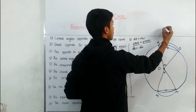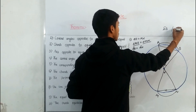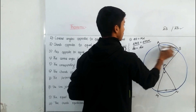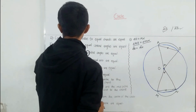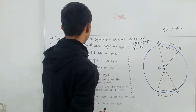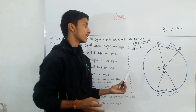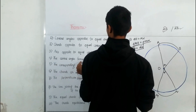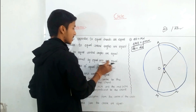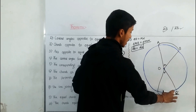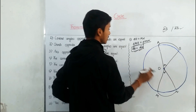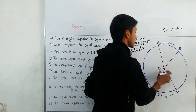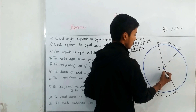We denote arc AB with a curved symbol above AB, and chord AB with a straight line above AB. Theorem 4: the central angles formed by equal arcs are equal. When arc AB is equal to arc MN, the central angles opposite to these two equal arcs are also equal.